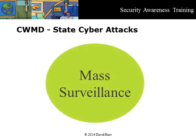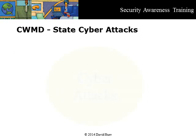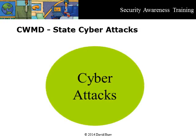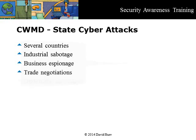State cyber attacks are the flip side of surveillance techniques. Although you might know of cyber attacks by organized crime for identity theft, you are not likely to be aware of state cyber attacks. Cyber attacks are tested or conducted by several countries. The techniques include industrial sabotage to destroy processing equipment, business espionage against global companies, and spying on trade negotiations, diplomats, and heads of state.